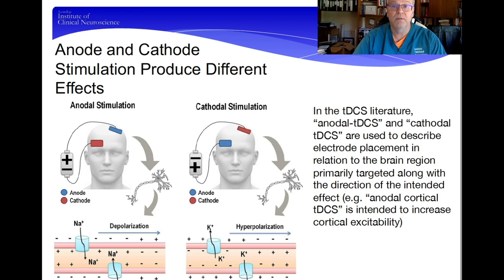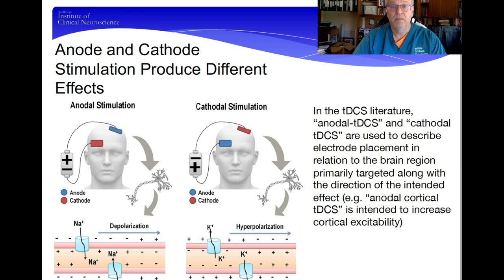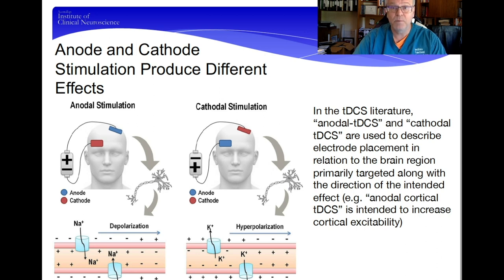In one instance we have excitation, in another inhibition. When we discuss anodal stimulation of a specific target, we're talking about depolarizing or exciting that brain area. Cathodal stimulation refers to inhibition or reduction of activity. However, as we explore this further, various assumptions about excitation and inhibition may change depending on parameters such as the duration of stimulation, current intensity, and electrode location, as well as normal individual variations.